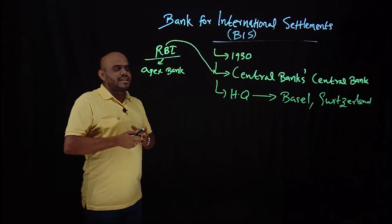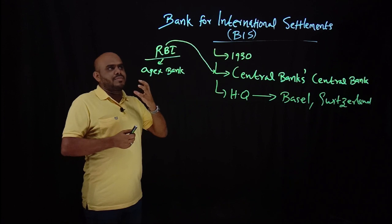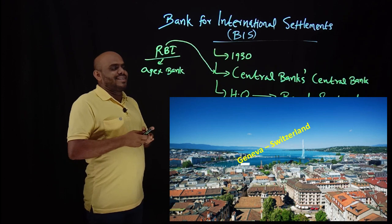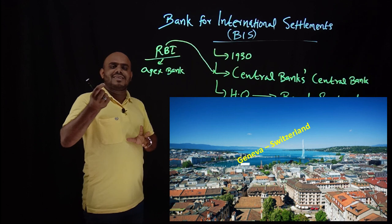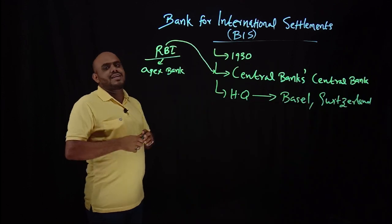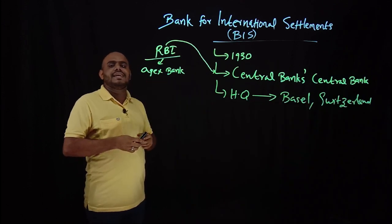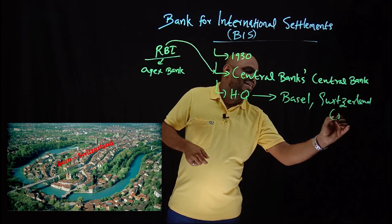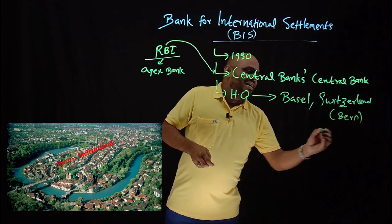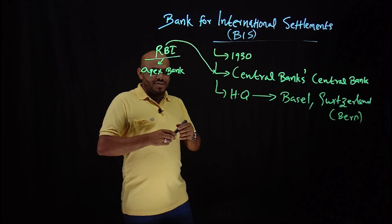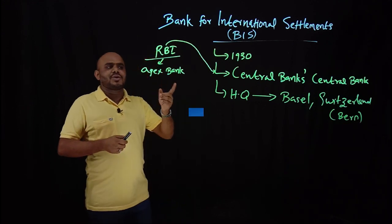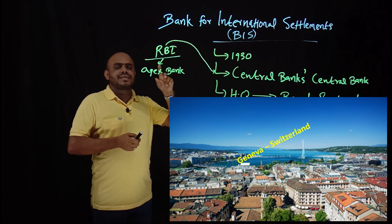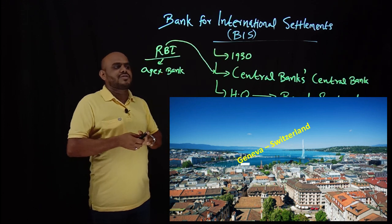The capital city of Switzerland is Berne — B-E-R-N. Geneva is also very important: it is the headquarters of WTO — World Trade Organization — and UNCTAD — United Nations Conference on Trade and Development — and the World Economic Forum.